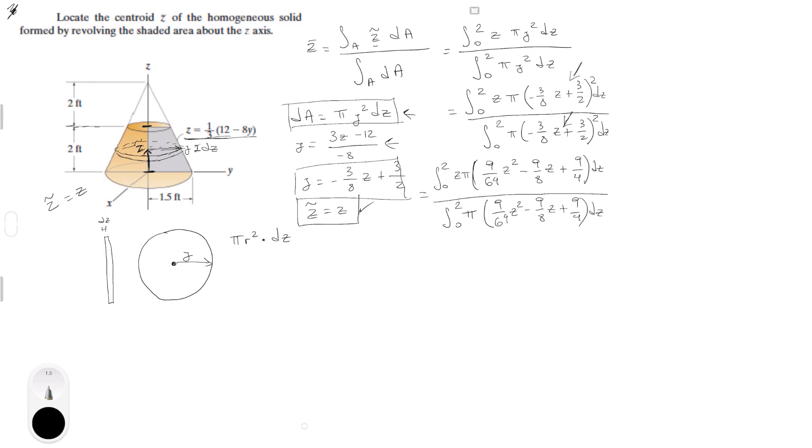So, let me move over here. Now, I am going to integrate it and I get 9 pi C to the 4 over 256. I am basically solving the top one now. I am going to solve the bottom one later. Here, minus 9 pi C cube over 24 plus 9 pi C square over 8 all from 0 to 2. And all that is over 9 pi C cube over 192 minus 9 pi C square over 16 plus 9 pi C over 4 all from 0 to 2.